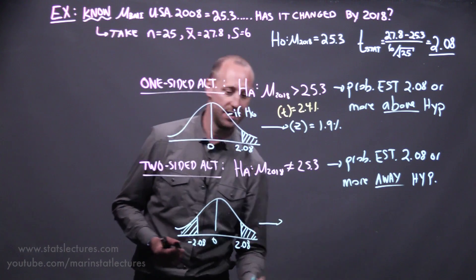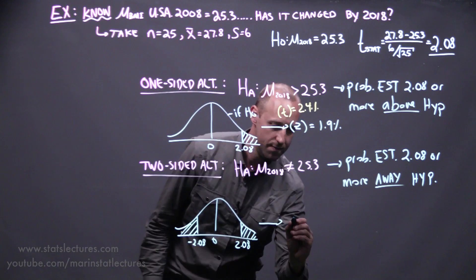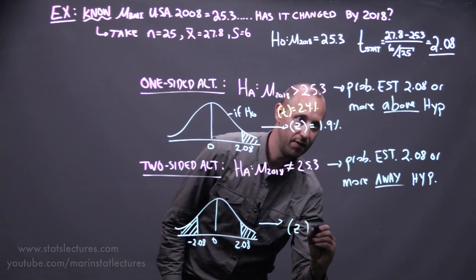One thing you can notice is that the two-sided alternative, the two-sided p-value is just going to be double the one-sided p-value.